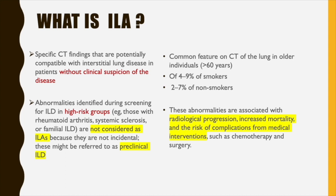By definition, when a radiologist writes the term interstitial lung abnormality, they intend to convey that it is an incidental finding on the CT scan, because the history was not asking for a diagnosis suggestive of ILD. When the radiologist sees any interstitial lung change consistent with ILD patterns, it would be termed as ILA rather than using different terms. It is a radiological, incidental finding with no clinical suspicion of disease based on the history provided.